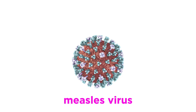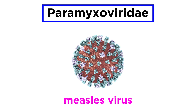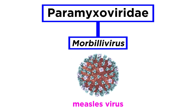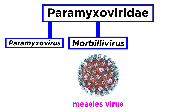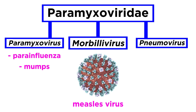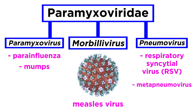With a brief history covered, let's talk more about the virus itself. The measles virus is part of the Paramyxoviridae family, and within that the Morbillivirus genus. The other two genera in this family are Paramyxovirus, which includes the parainfluenza and mumps viruses, and Pneumovirus, which includes respiratory syncytial virus, or RSV, and metapneumovirus.